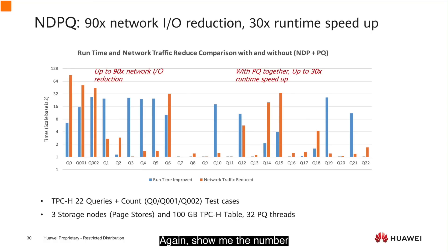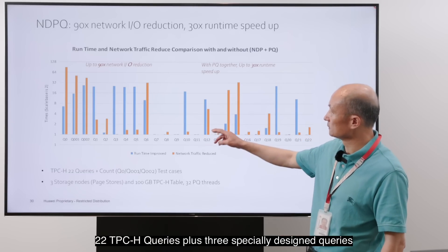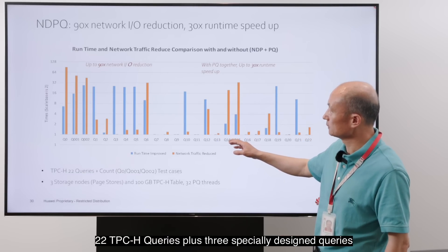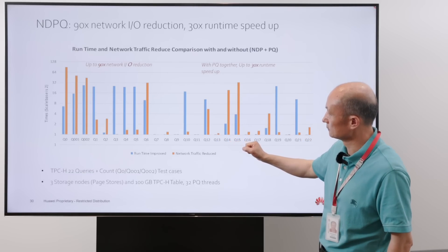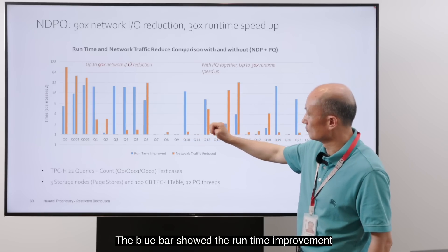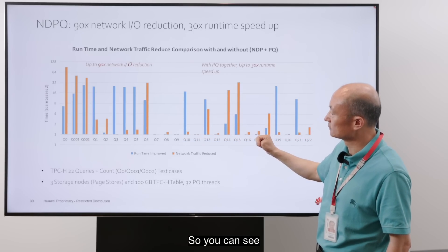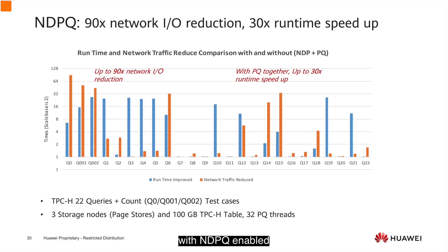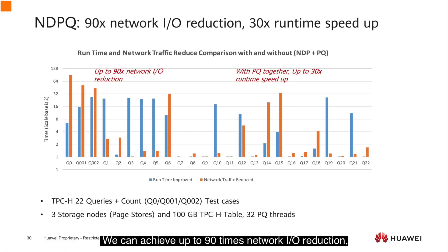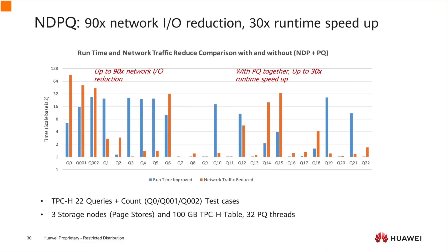This diagram shows 22 TPC-H queries plus 3 specially designed queries. The blue bar shows runtime improvement, while the yellow bar shows network traffic reduction. With NDP query enabled, we can achieve up to 90 times network IO reduction and up to 30 times runtime speedup.